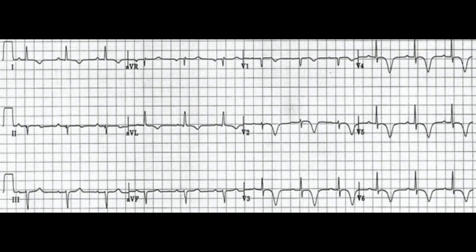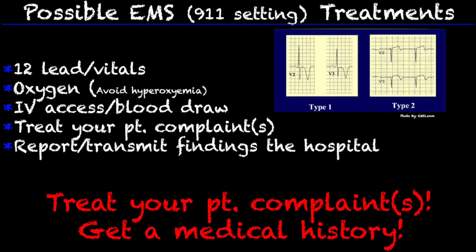Taking a look at Wellens' syndrome on a 12-lead, you can see there is T-wave inversion from V1 to V6, but there is very prominent T-wave inversion on V2, V3, V4, V5, and V6.